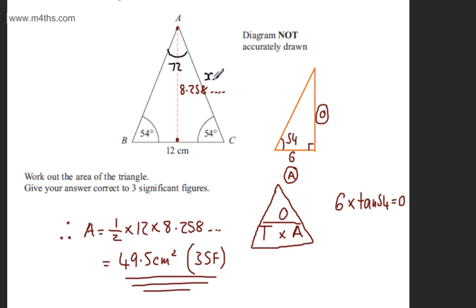So if you wanted you could say that's x and to find x, x over the sine of 54 is going to equal 12 over the sine of 72. So x is going to be 12 sine 54 over sine of 72. Then that would give us x.